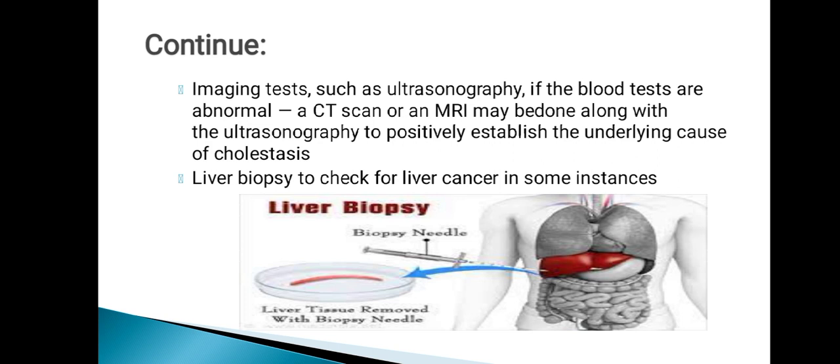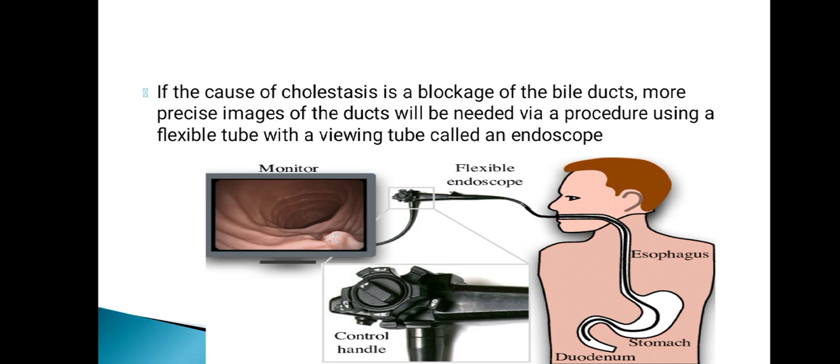Imaging tests are also used. If blood tests are abnormal, a CT scan or MRI may be done along with ultrasonography to establish the underlying cause of cholestasis. Liver biopsy is used in some instances to check for liver cancer. If the cause is a blockage of the bile duct, a more precise image is obtained via a flexible tube with a viewing scope called an endoscope.